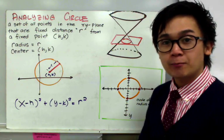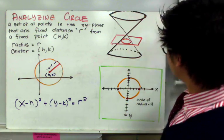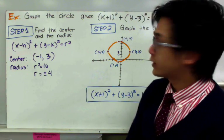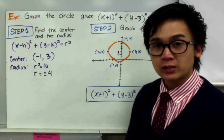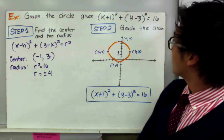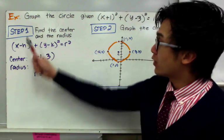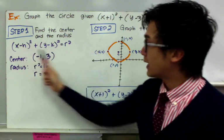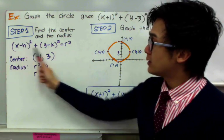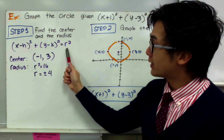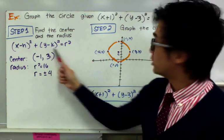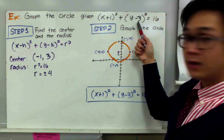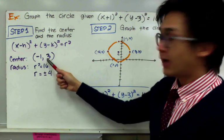For our first example, we have to graph the circle given its standard equation: (x + 1)² + (y − 3)² = 16. The first step is to find the center and radius from the standard equation. Looking at the given equation, h = −1 and k = 3, so the center is at (−1, 3).